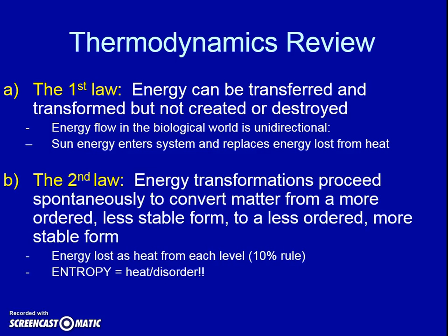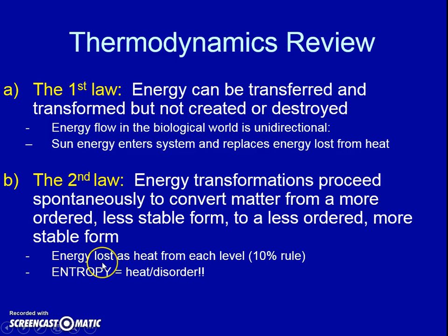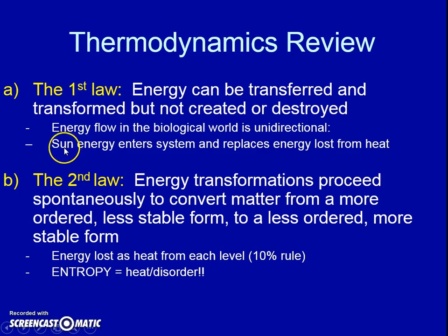The second law of thermodynamics: energy transformations will proceed spontaneously to convert matter from a more ordered, less stable form to a less ordered, more stable form. That means entropy — heat or disorder — happens spontaneously. When different creatures eat each other, they always lose some energy to do work, and we know that's heat or entropy. Ninety percent of the energy is lost — we call that the ten percent rule. That's also related to why the sun is very important; it continues to give us more and more energy because we're an open system.